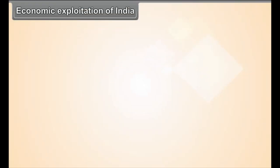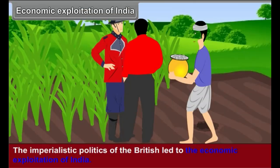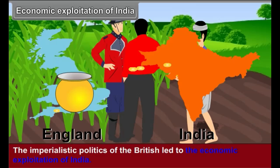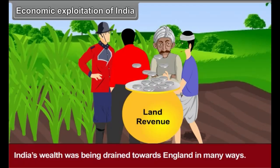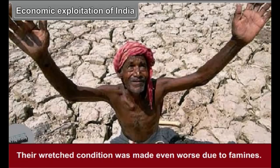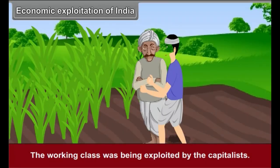Economic Exploitation of India: The imperialistic policies of the British led to the economic exploitation of India. India's wealth was being drained towards England in many ways. The middle class was forced to bear the burden of a variety of new taxes. The peasants were crushed by the burden of land revenue, and their wretched condition was made even worse due to famines. The working class was being exploited by the capitalists. As a result, there was deep discontent in the minds of all.